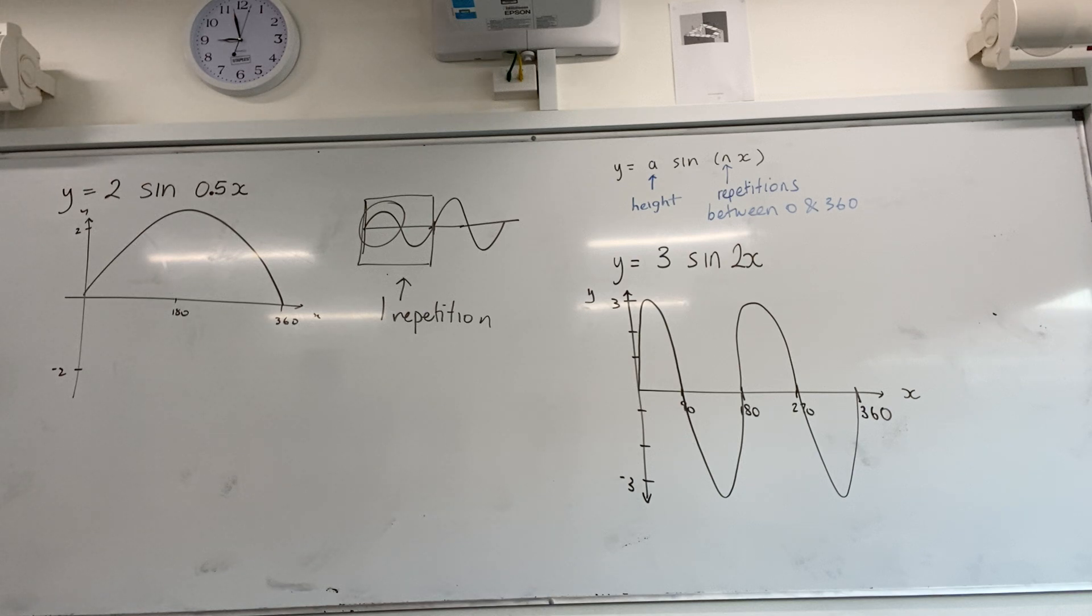So that means, yeah, because you're always from the beginning the first half. So the number in front of the x tells you how many times, how much of the repetition has to be included between 0 and 360. Does it change the sign, like sine, cosine, tangent? Yeah, yeah.